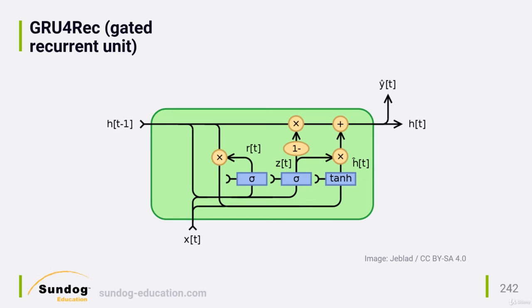This gives the network an internal hidden state within each unit that must be maintained. GRU gates learn when and by how much to update that hidden state within each unit. Because the paper relies on GRUs with some customizations for the recommendation problem, the technique is sometimes referred to as GRU4Rec.